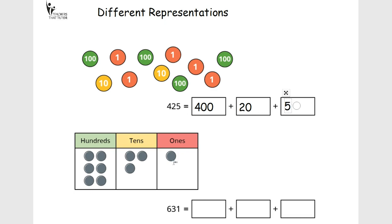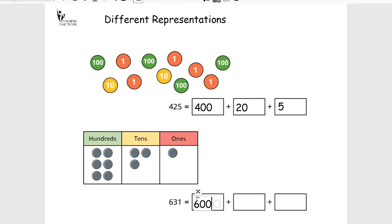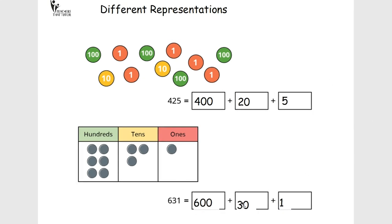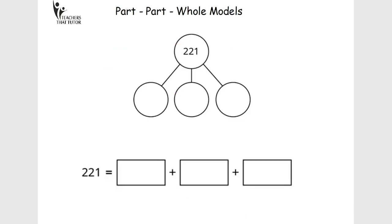And here we've got the counters again, but this time shown in a place value chart. So it's asking us to partition it again. So 631 would be 600, 30, and 1. That's just a different way of the children understanding and being able to show these different three- and four-digit numbers.